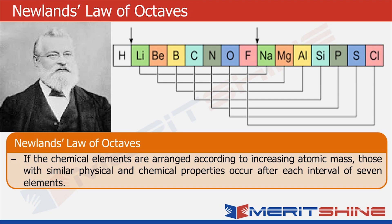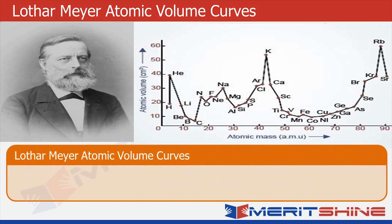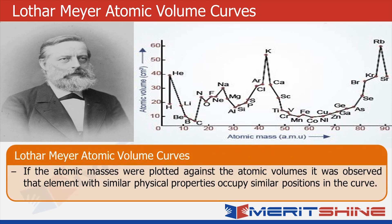But this generalization was also rejected because it could not be extended to the elements with atomic masses more than 40. And then came Lothar Mayer's atomic volume curve. In 1869, Lothar Mayer plotted a graph between atomic volume of the elements and their atomic mass. And he pointed that the elements with similar properties occupy similar position in the curve.